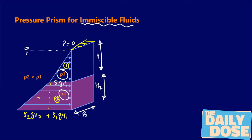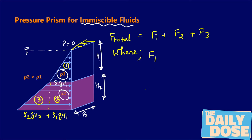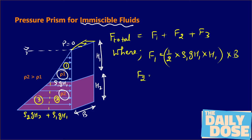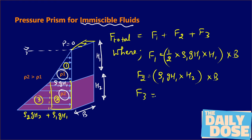The pressure prism can be divided into three simple figures: a triangle, then a rectangle, then a triangle. The total hydrostatic force equals F1 + F2 + F3. F1 is the volume of prism 1: half × rho-1·g·h1 × h1 × b. F2 is the volume of prism 2: rho-1·g·h1 × h2 × b. F3 is the volume of prism 3: half × rho-2·g·h2 × h2 × b.